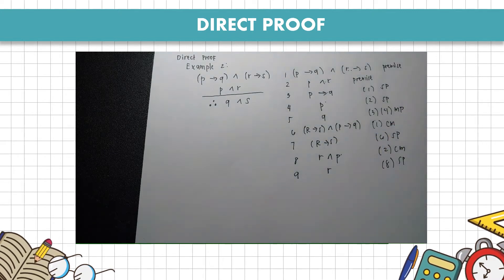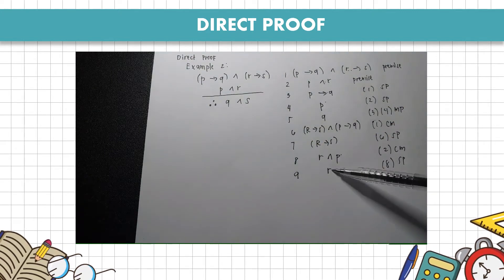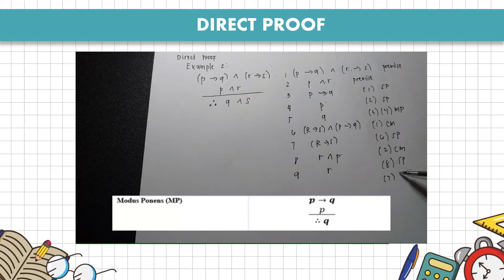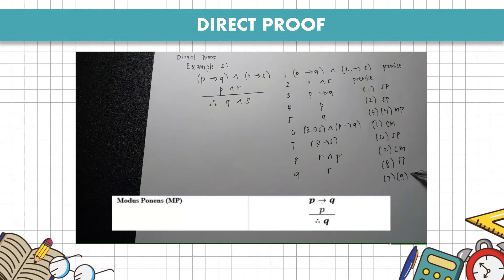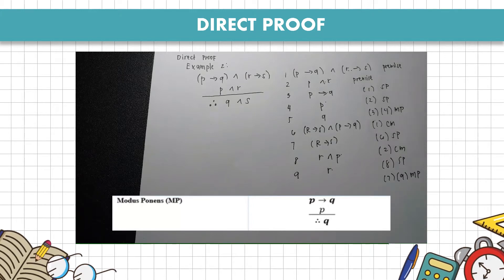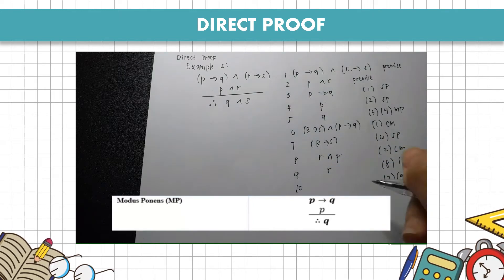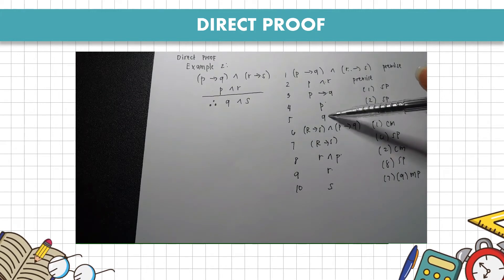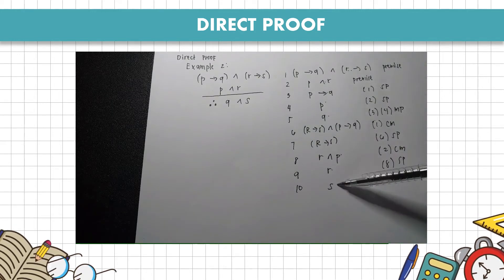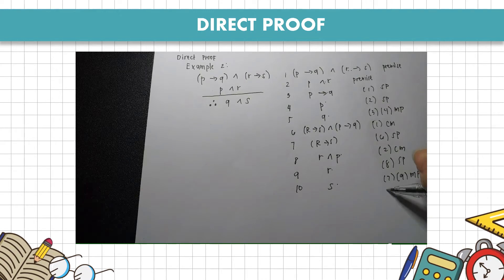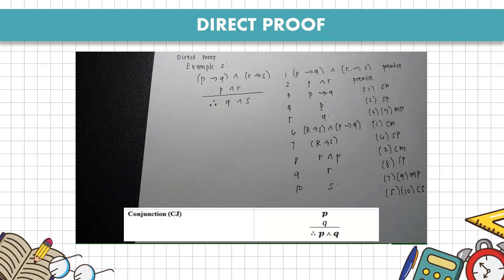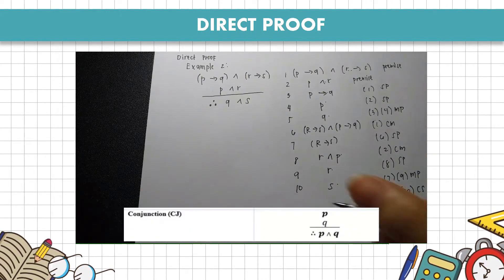Then steps 7 and 9 resemble modus ponens (MP), so the answer we get is S.